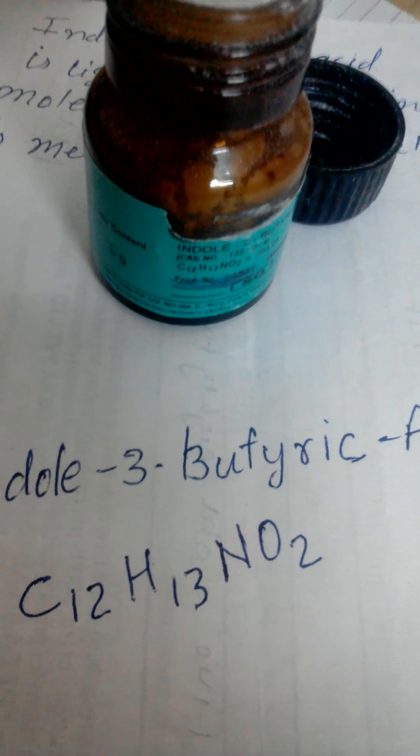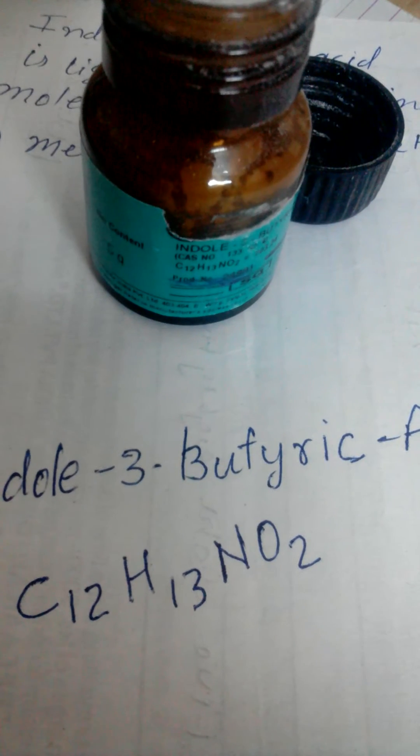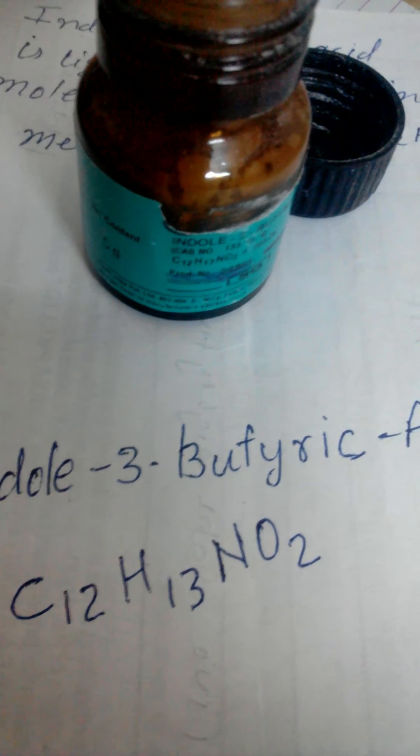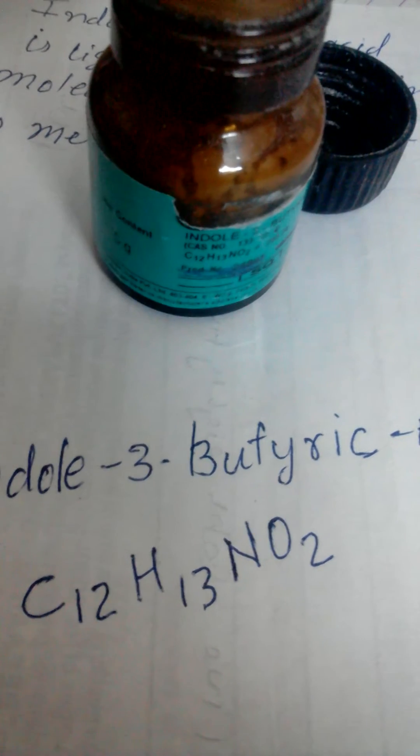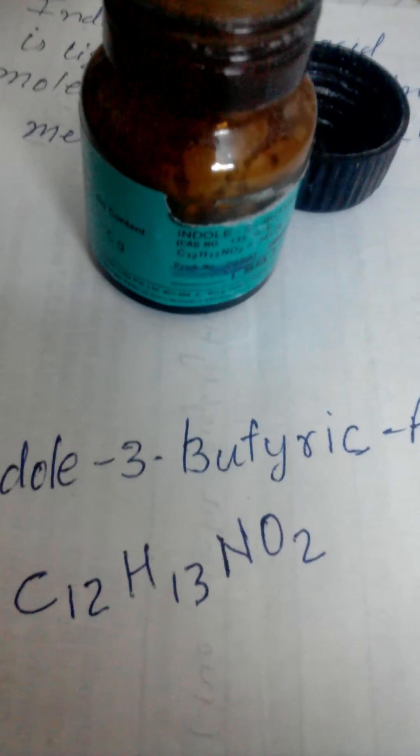To root any plant, use 100 ppm IBA. So I'll tell you how to make it. First, take indole-3-butyric acid.